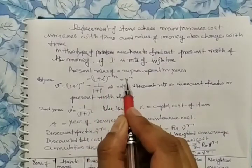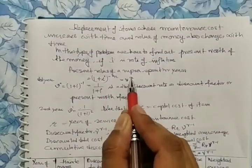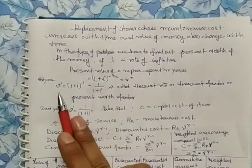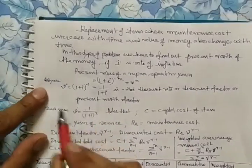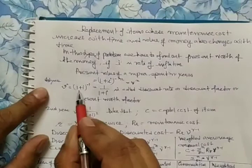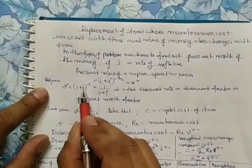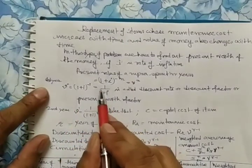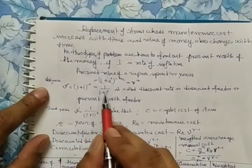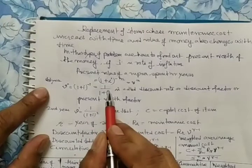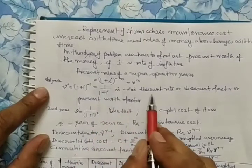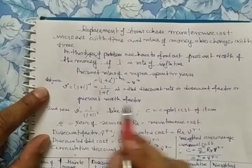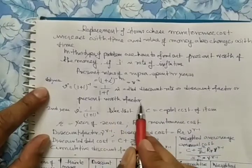This is equal to v to the power n. After the first year, it will be (1 + i) to the power minus 1, which is 1 divided by (1 + i) for 1 rupee. This is called the discount rate, discount factor, or present worth factor.